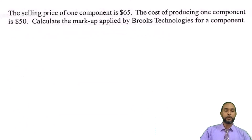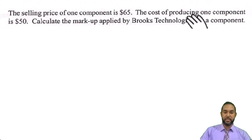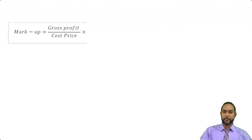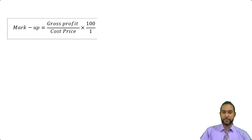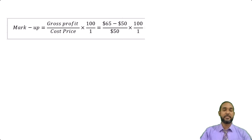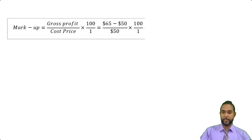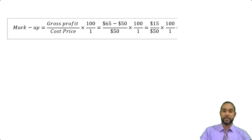Let's check out A part two. The selling price of one component is $65. The cost of producing one component is $50. Calculate the markup applied by Brooks Technologies for a component. Markup, as you should know, is gross profit over cost price multiplied by 100. The gross profit is selling price minus cost price. So we have 65 minus 50 over 50 by 100. 65 minus 50 is 15. 15 over 50 by 100 is 30%. Simple and straightforward.